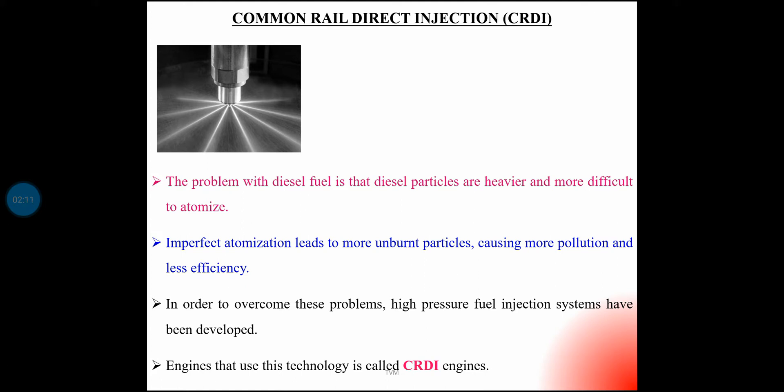In a conventional diesel engine fuel system, there are two pumps: a low pressure pump and a high pressure pump. The conventional system injects fuel at around 200 to 300 bar pressure.